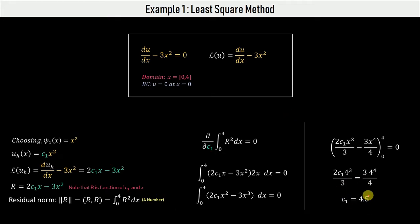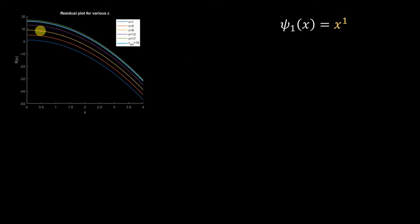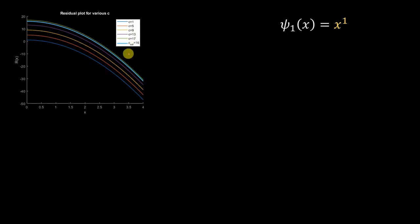Now let us see the plots for different basis functions — the process is similar, we just use different ψ functions. Starting with ψ₁ = x, this plot shows the residual as a function of x for various values of c. Each curve represents the residual variation along the domain for a given c, and the solution for this case is c = 16.